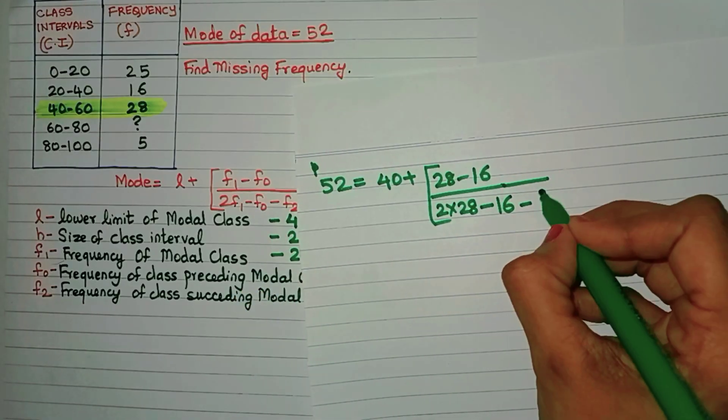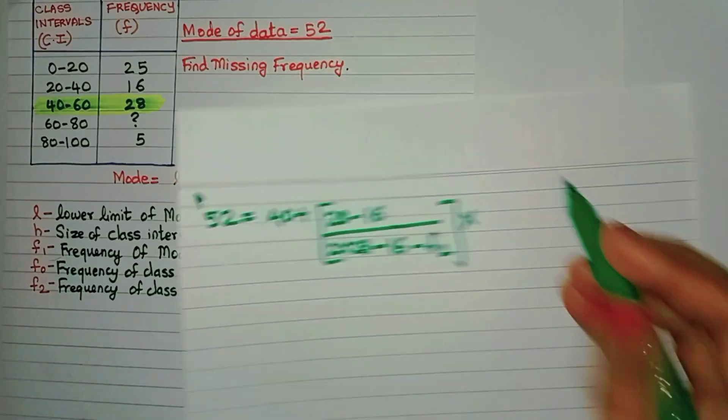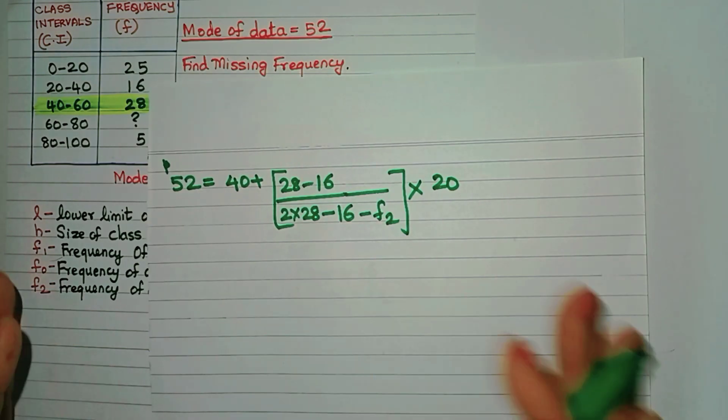So what is F2? It will be F2. We don't know its value multiplied by H. So what is H? 20. See friends, we have substituted. Now it is just about solving this.